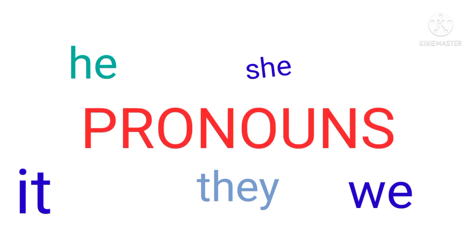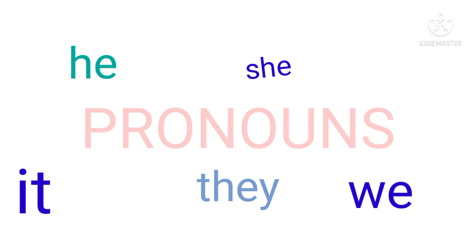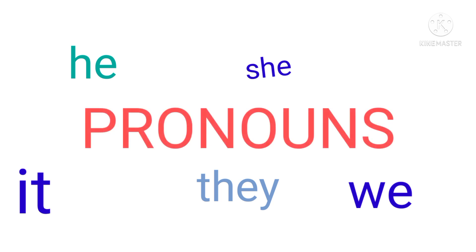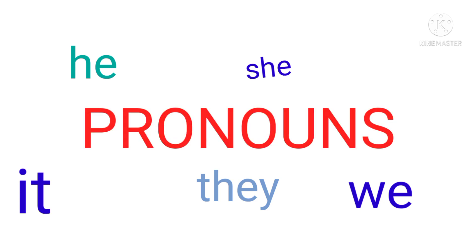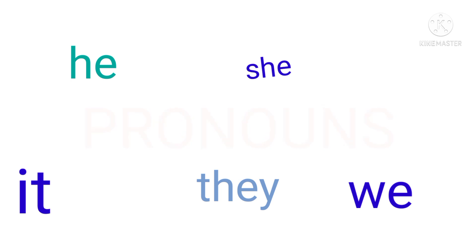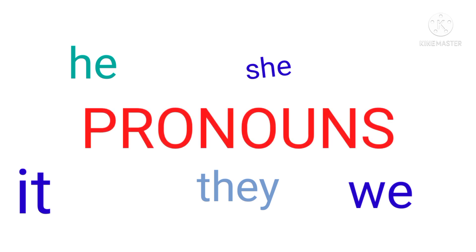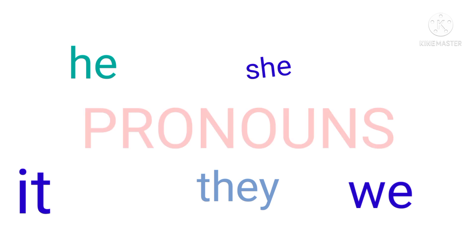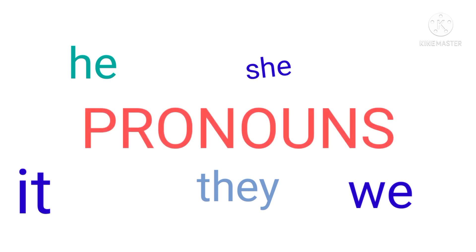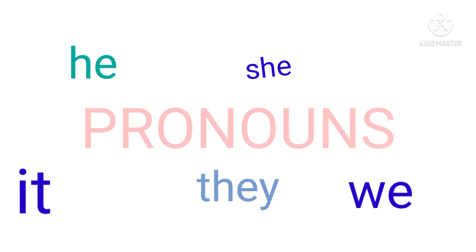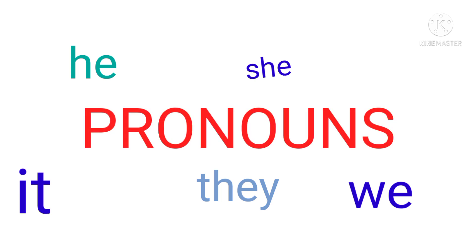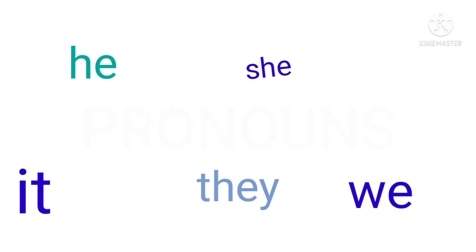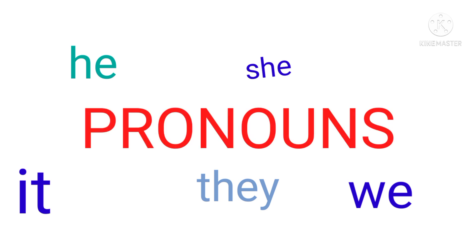So children, sometimes different words are used in place of naming words. Such words are called pronouns. Words used in place of a noun are called pronouns. We use pronouns to avoid the repetition of the noun. Pronouns I, you, he, she, it are used for one person. We, you, they are used for more than one person.